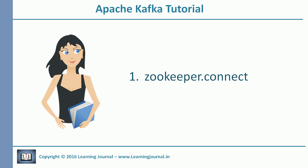zookeeper.connect — this parameter takes a zookeeper connection string. The connection string is simply a hostname with a port number. We already know that Kafka uses zookeeper for various coordination purposes, so it is critical that every broker knows the zookeeper address.